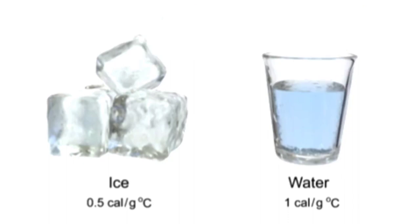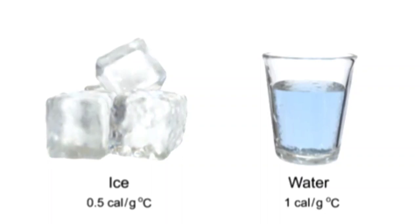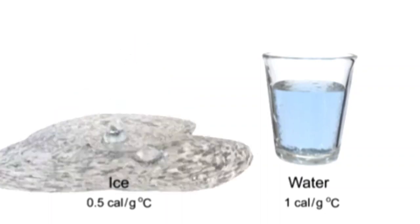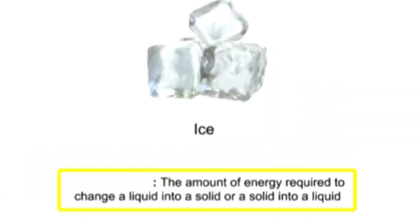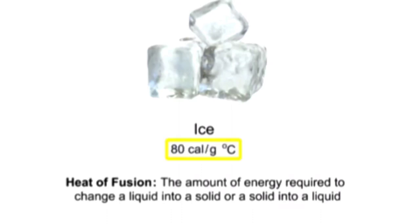The processes of phase change between solid, liquid, and gas also require a specific amount of heat energy. The amount of energy required to change a liquid into a solid or a solid into a liquid is known as heat of fusion. The amount of heat required to change one gram of ice to water is 80 calories.